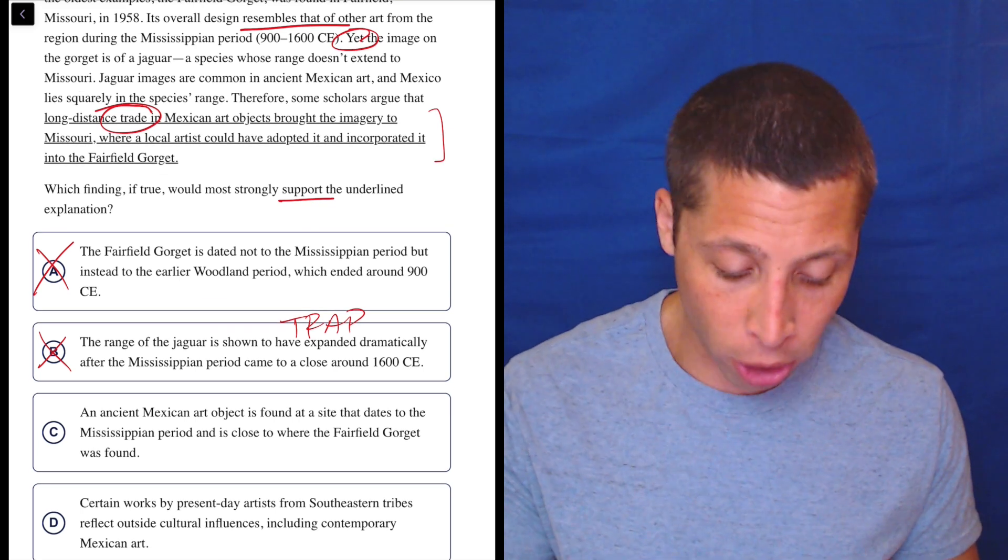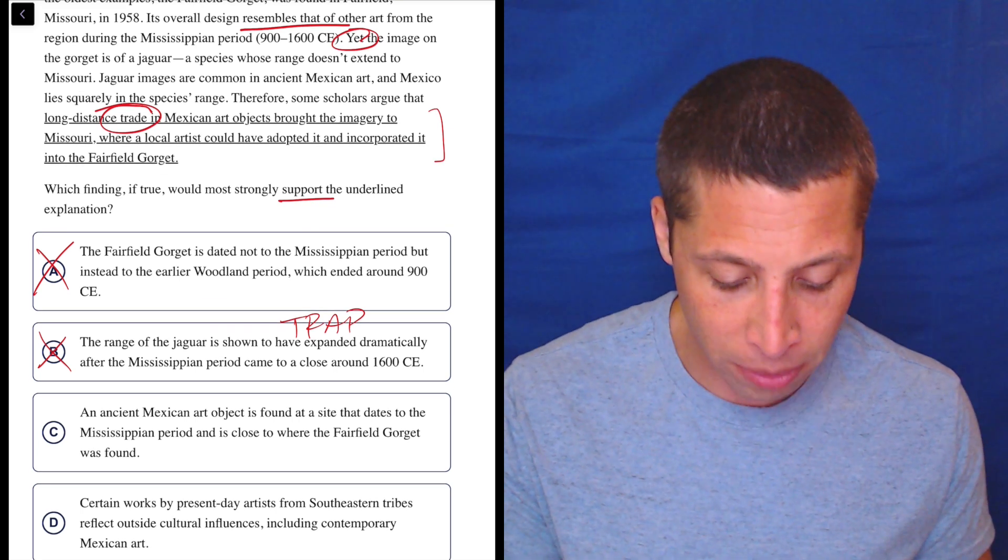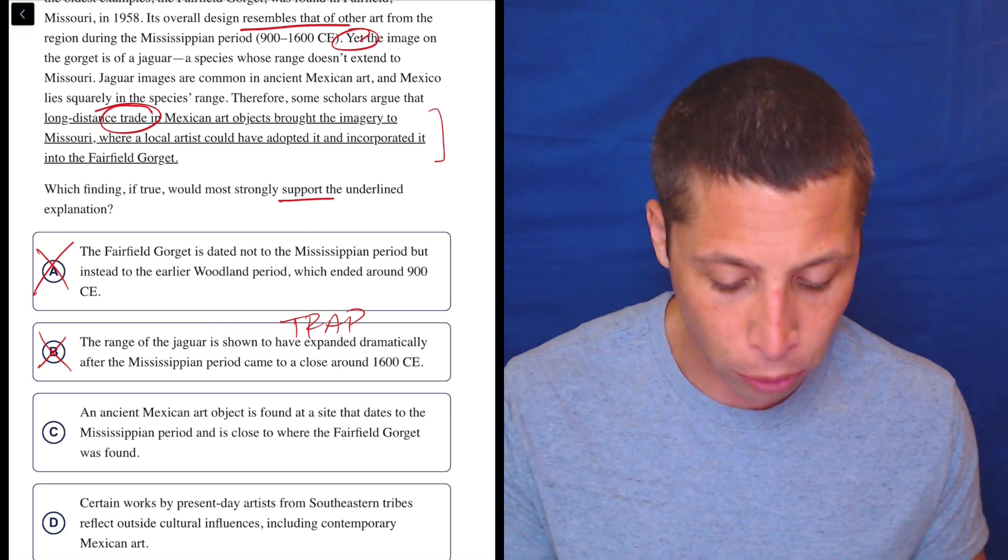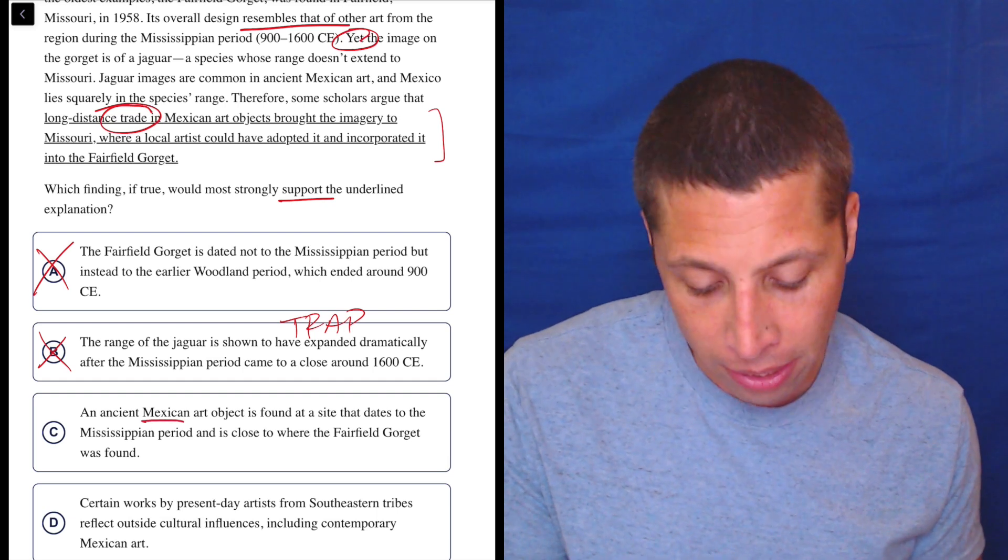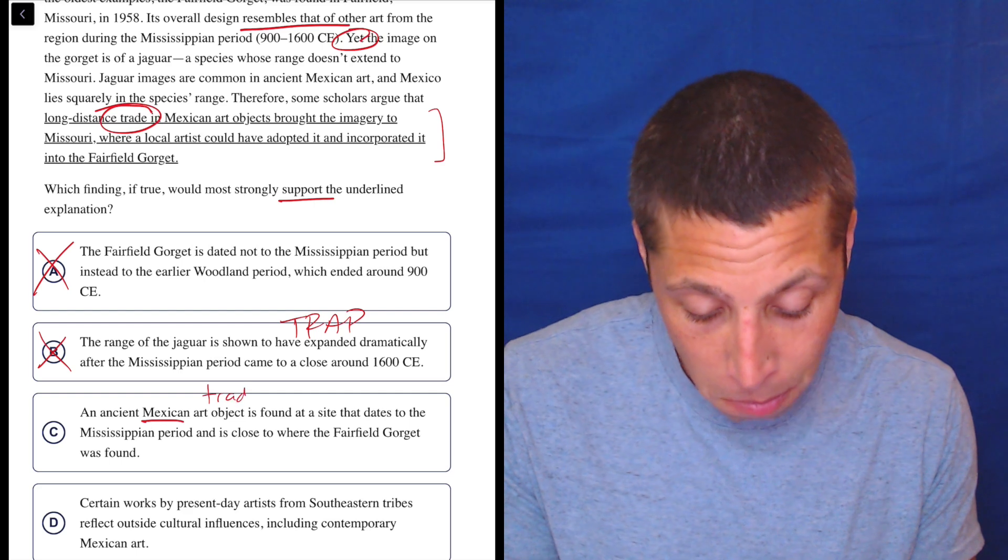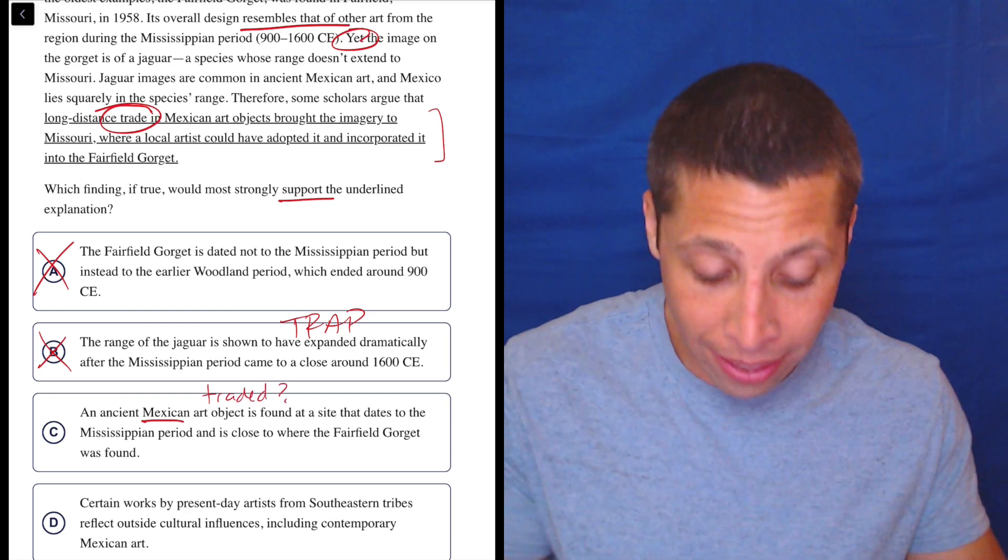C, an ancient Mexican art object is found at a site that dates to the Mississippian period and is close to where the Fairfield gorget was found. So why would this Mexican art object be there? Because maybe it was traded? I don't know. I wish they said that word.